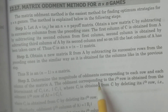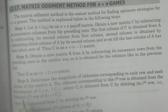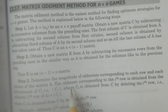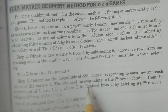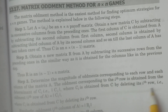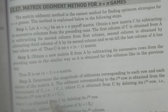In step 3, determine the magnitude of oddments corresponding to each row and each column of the matrix A. The oddment corresponding to the ith row is obtained from the determinant of Ci. To calculate the magnitude of oddments, you have to calculate the determinant of Ci. Ci is obtained from C by deleting the ith row. You have to determine the determinant for all C1, C2, C3 — for however many rows are in the column matrix. The oddment of the ith row equals the determinant of Ci.